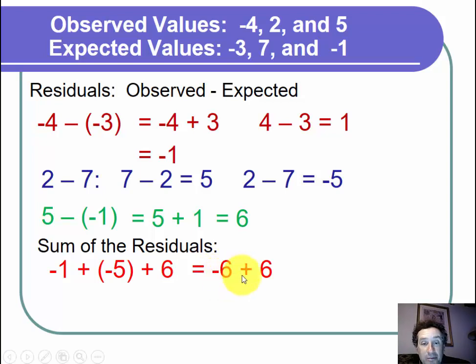Now we have negative 6 plus 6. Well, negative 6 plus 6 is the same as 6 minus 6, and 6 minus 6 is 0. And there's the sum of the residuals. The sum of negative 1, negative 5, and 6 is just 0. And I'm done with the problem. Thank you for watching this video.